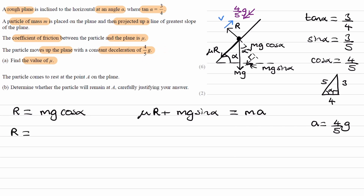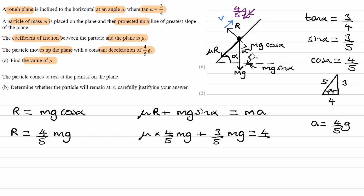Substituting in: r equals mg cos alpha equals 4 fifths mg. The equation becomes mu times 4 fifths mg, plus mg sin alpha which is 3 over 5, equals ma, where a is 4 over 5 g, giving 4 over 5 mg. The mg's and 5's cancel, simplifying the whole equation to 4 mu plus 3 equals 4. Taking 3 to the other side gives 4 mu equals 1, so mu equals one quarter — that is our answer to part A.